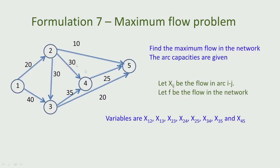This is the network that we are going to consider. This network has five nodes or vertices, and the network has arcs connecting these nodes. The arc from 1 to 2 — these arcs are represented as i,j and they go from i to j. For example, 1 to 2, 1 to 3, 2 to 3 and so on. This network is a directed network, which means arcs are given directions.